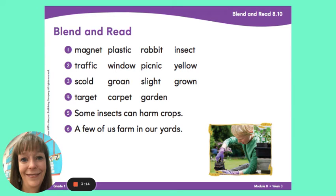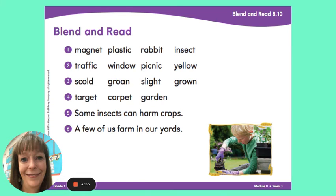Let's look at line three. Read it with me now. Scold, groan, slight, grown. What do you notice about some of these words? We have the word groan, G-R-O-A-N, and the word grown, G-R-O-W-N. The two words sound exactly the same, but they're both spelled differently — one has O-A and one has O-W. And they both mean different things. The first groan with an O-A means, like when you groan like that. The second one with the O-W means grown, like you have grown taller. Fantastic.